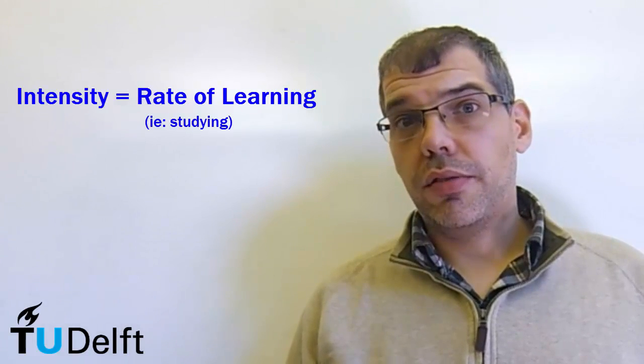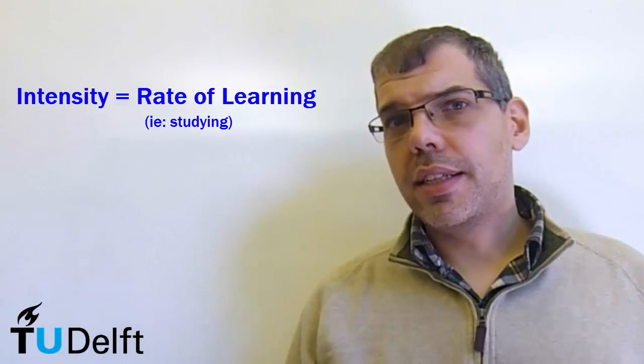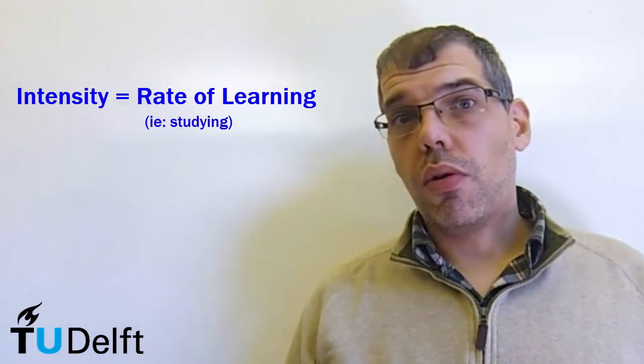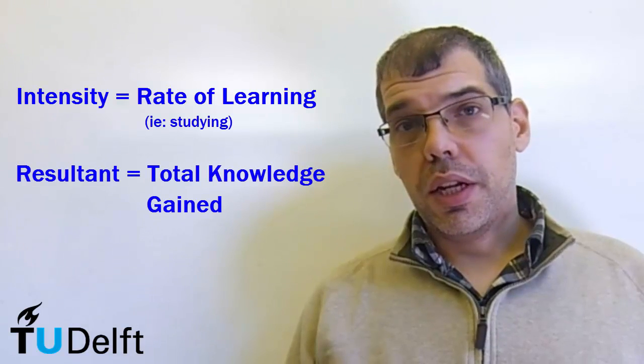I find it's easier for students to remember this danger of using an average stress assumption by using an analogy that relates a little bit more to what students are experiencing now, and that is the stress associated with the typical university course. If you look at what stress is for a student in a course, it's related to their studying, their rate of learning or accumulation of knowledge. That is the intensity. Whereas the resultant of a course is the overall knowledge learned, the knowledge gained.